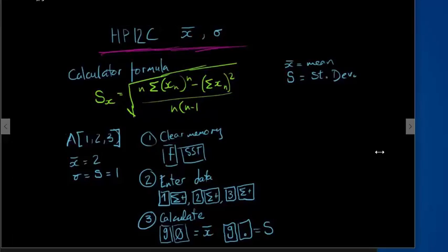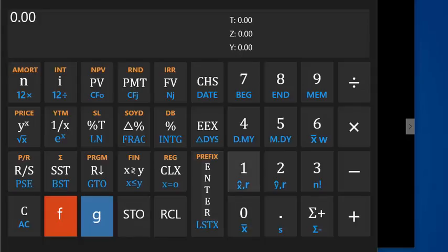Step 2, enter the data. 1, sum plus. So the first data entry is 1 and we're going to enter the sum plus value to add to our data set.